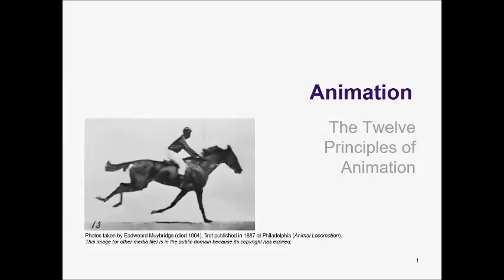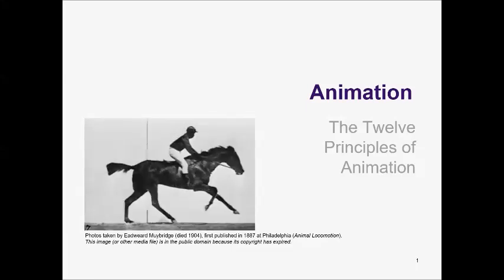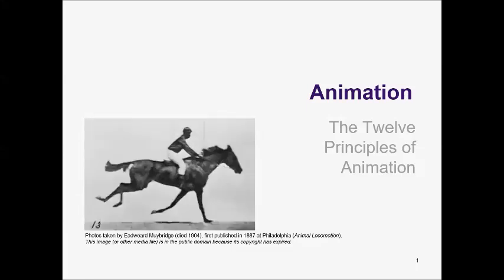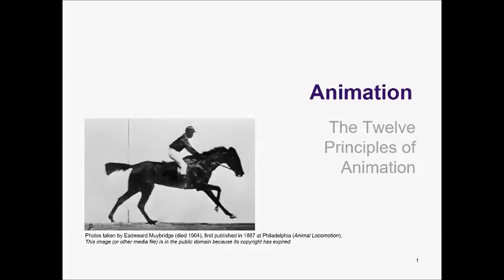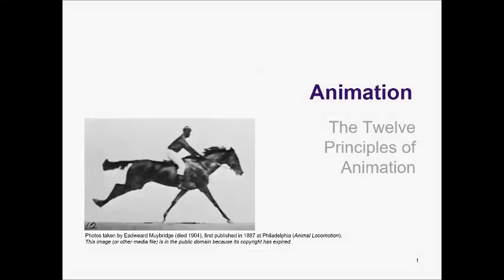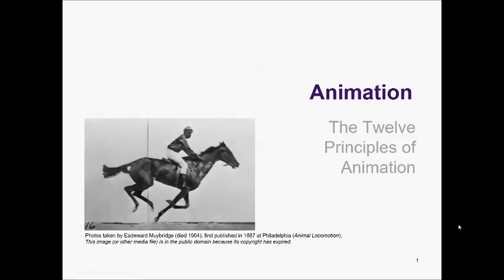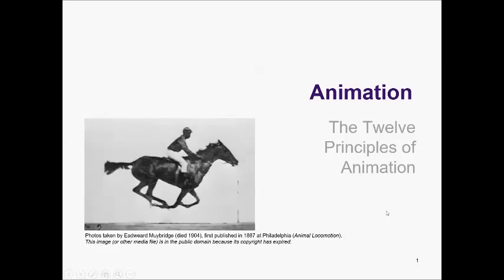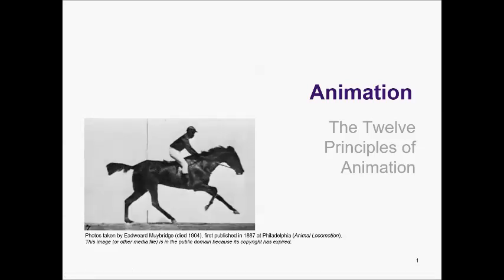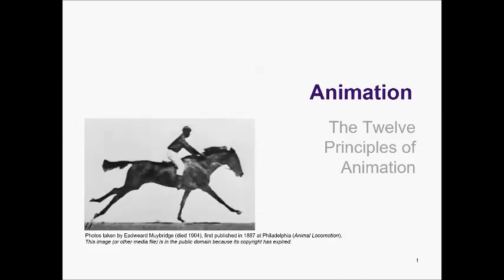As you can see here, there is a motion of an object — a horse and a rider. This is not just a plain picture but rather an image with a moving transition. This photo was taken by Edward Muybridge, who died in 1904, and was published in 1887 in Philadelphia.